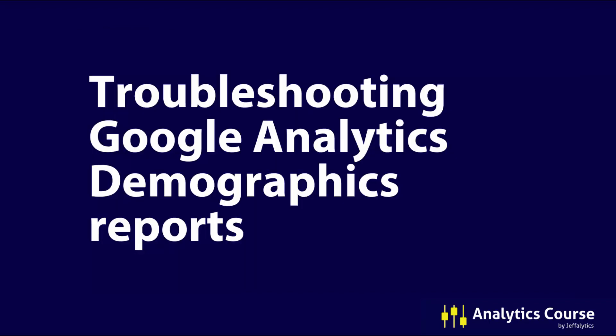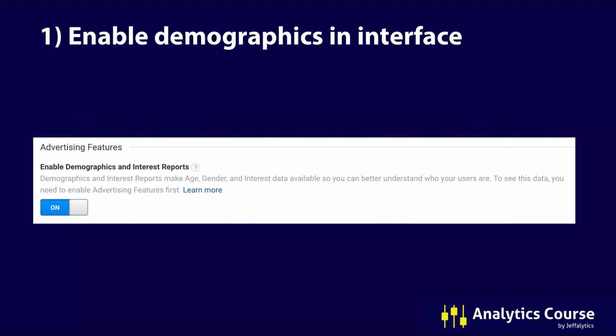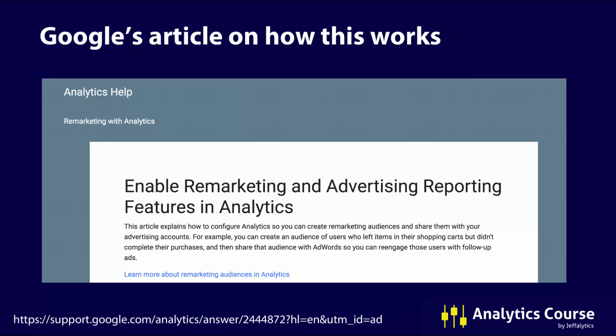Denise and I worked through and troubleshot the Google Analytics demographics reports by following these steps. Traditionally, to get demographics to work, you need to do the following. At the very least, you need to enable demographics in the Google Analytics interface. At your web property settings, you can see a button to turn this on or off. Google makes it sound like everything should just be perfect once enabled, but that's not always the case.